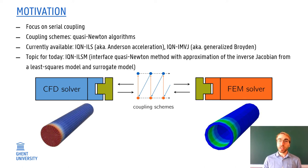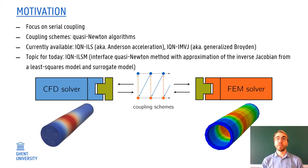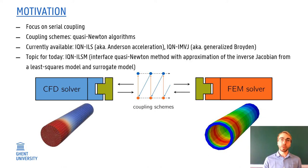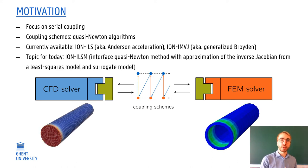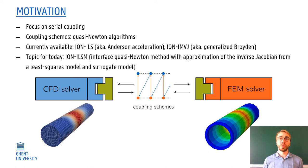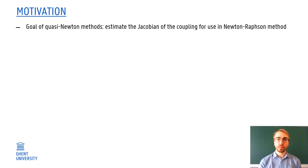The method I want to explain to you today is IQN-ILSM. It's a mouthful, but actually stands for Interface quasi-Newton method with approximation of the inverse Jacobian from the least squares model and surrogate model. So the least squares model is the black box part and the surrogate model, that's the physical information we want to introduce.